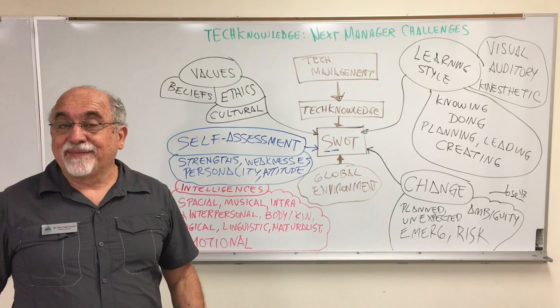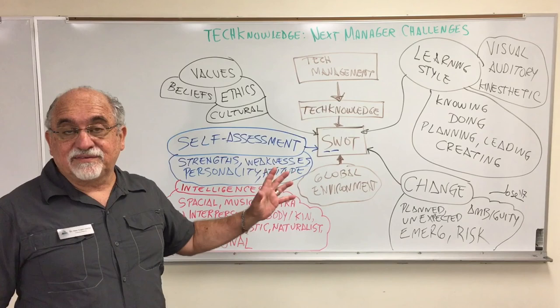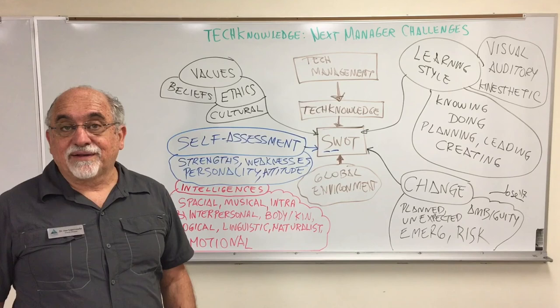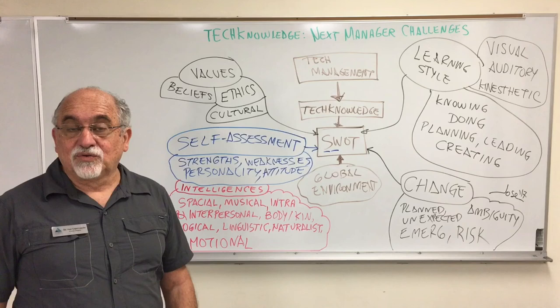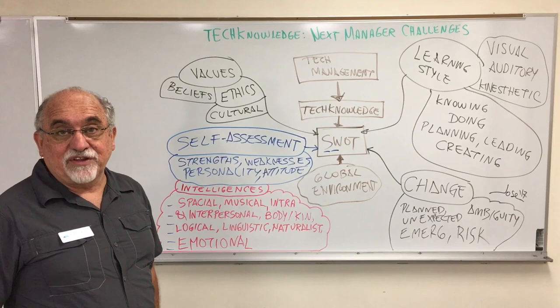We're going to organize the company or our institution based on the people that we need. This short diagram is going to tell you what the components around the organization are — relating to intelligences, attitudes, beliefs, values, changes, and learning styles. We're going to do a short video that covers these different areas.